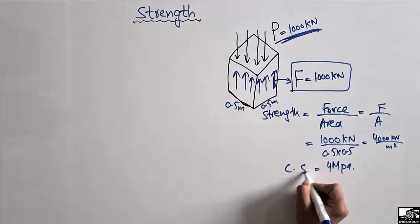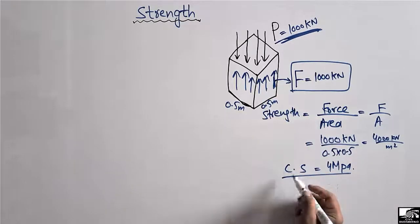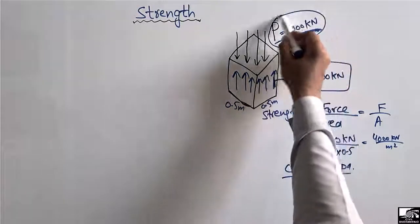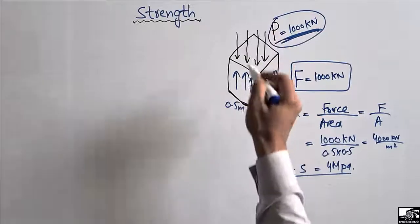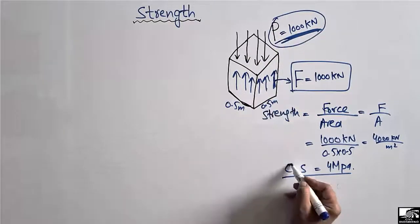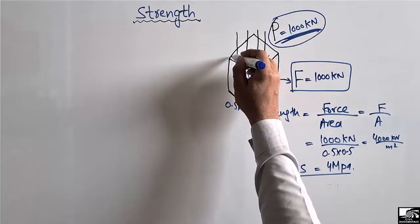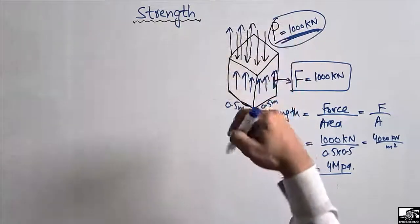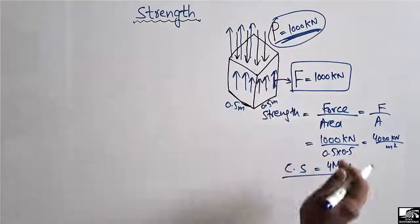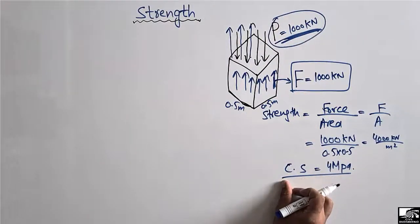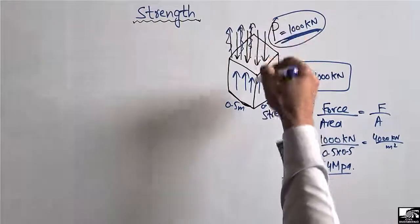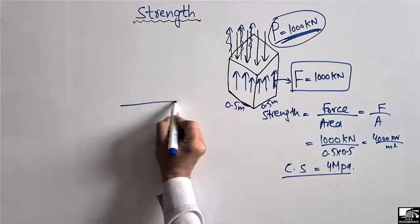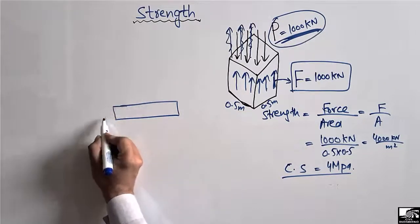This is the compressive strength of this material. It is called compressive because the load was acting in the compressive direction. If the load were in the other direction — elongating or expanding the material — we would call that the tensile strength. Since this load compressed the material, we call it compressive strength.